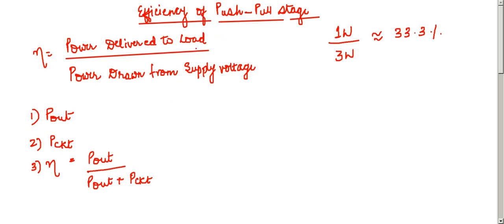Now, let us compute the efficiency of a push-pull amplifier. In our previous lectures, we have computed the average power for a push-pull stage as pAV equals vp upon RL into vcc upon pi minus vp upon 4.